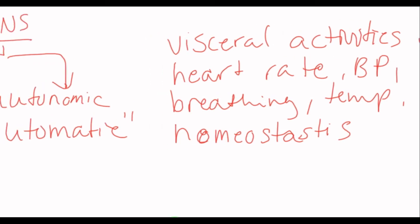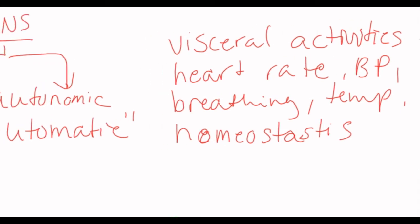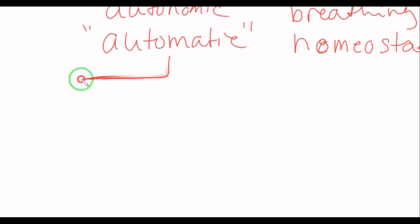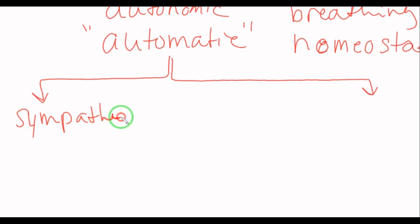So, that is what the autonomic nervous system controls. Then, the autonomic nervous system is divided into two systems, the sympathetic and the parasympathetic.